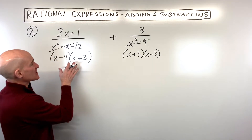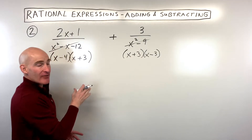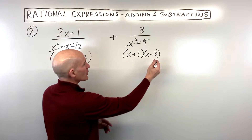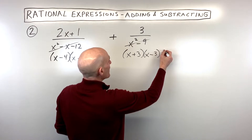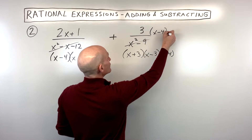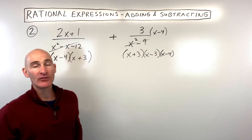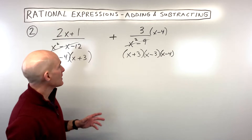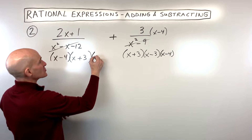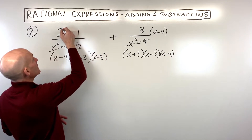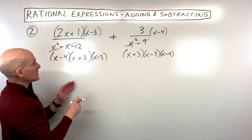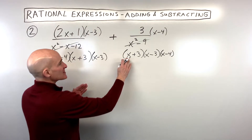The way I like to do it is I look at it and see what I have and what I need. I've got an x minus 4 here but not here, so I go ahead and multiply by what I'm missing, which is that x minus 4. Whatever I do to the denominator, I have to do to the numerator to keep that fraction balanced — it's like multiplying by 1. Same thing: I've got an x minus 3 here but not here, so if I multiply the denominator by x minus 3, I multiply the numerator by x minus 3. Now we have the same denominator.